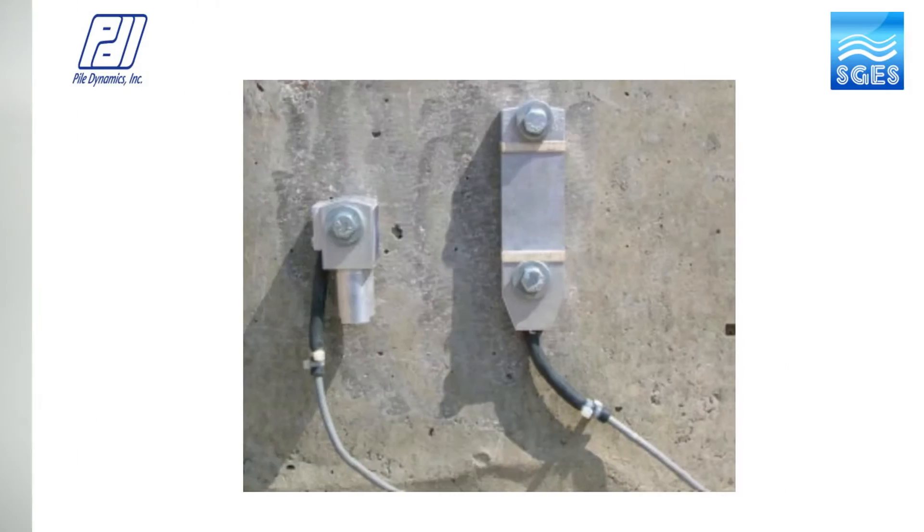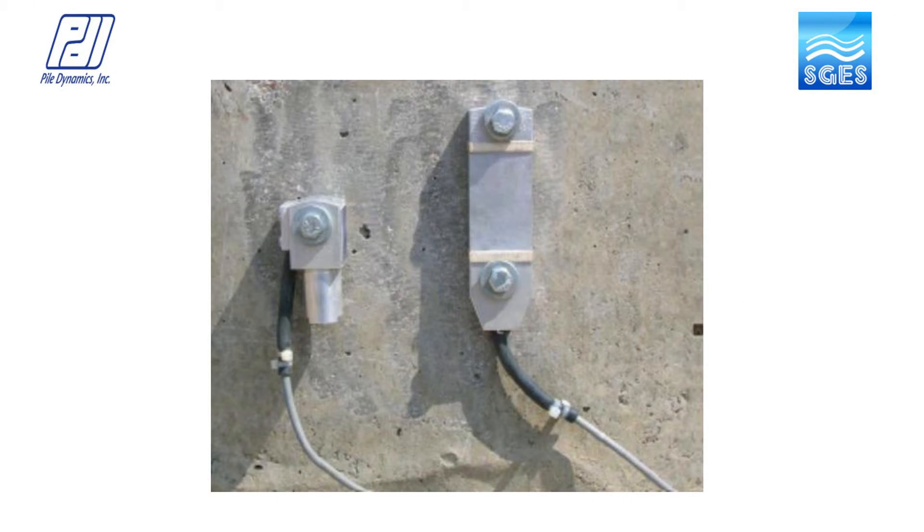The High Strain Dynamic Test involves instrumenting the pile top with strain gauges and accelerometers. The strain gauge measures the strain in the member during an impact. Knowing the modulus of the material and the cross-sectional area, along with the measured strain, you can evaluate the force on the pile top. The accelerometers measure the motion of the pile; integrating the acceleration gives you velocity. Force and velocity are proportional with a constant impedance Z, defined as EA divided by the wave speed — the modulus and cross-sectional area divided by the wave speed.